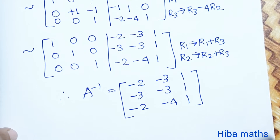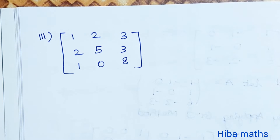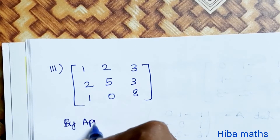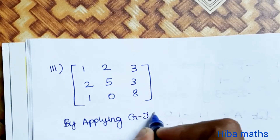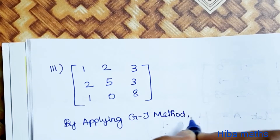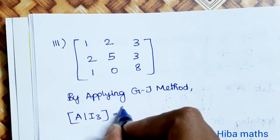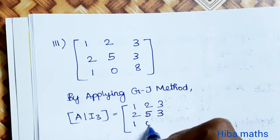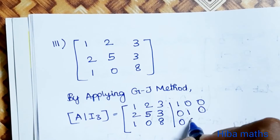Next is the third question. The matrix is [1, 2, 3; 2, 5, 3; 1, 0, 8]. By applying the Gauss-Jordan method, we write the augmented matrix [A | I3]: [1, 2, 3 | 1, 0, 0; 2, 5, 3 | 0, 1, 0; 1, 0, 8 | 0, 0, 1].